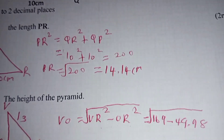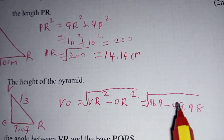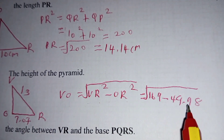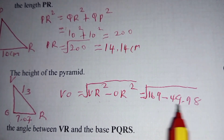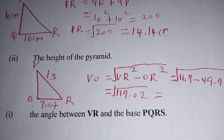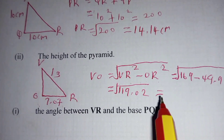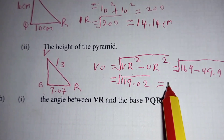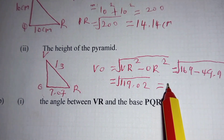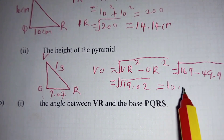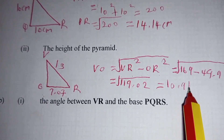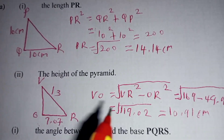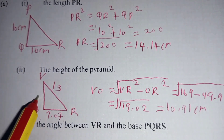So 13 squared is 169, and 7.07 squared is 49.98. When you subtract, you obtain 119.02. The square root of this equals 10.91 centimeters. So VO is the height of the pyramid.